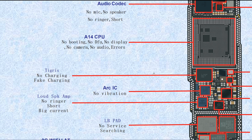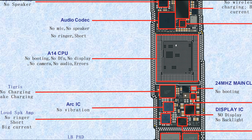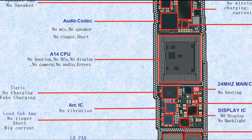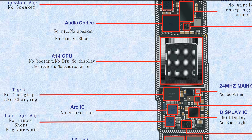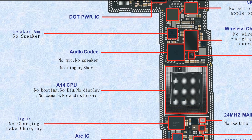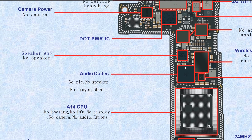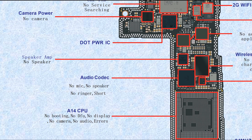This one is the A14 CPU. If broken, it causes a lot of different problems: no booting, no DFU, no display, no camera, no audio, and so on. This one is the audio codec — sometimes we call it audio IC, sometimes codec IC, they are the same. If broken, it causes no microphone, no speaker, no ringer, or sometimes a short.